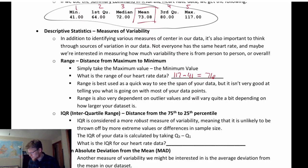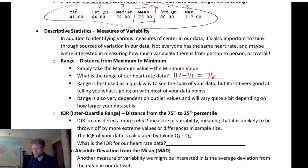For example, what if 41 was the lowest data point but the next lowest data point was like 65? That would leave a lot of unknown information when looking at only the range.